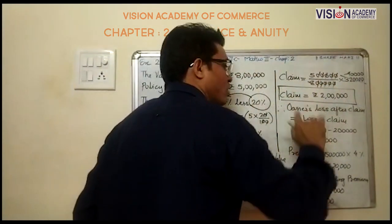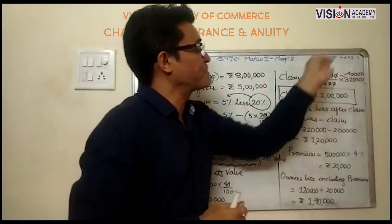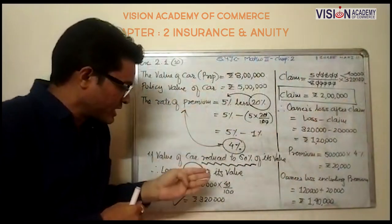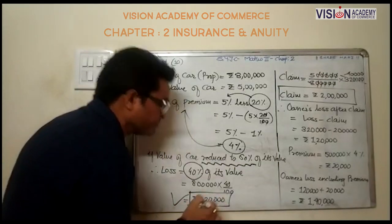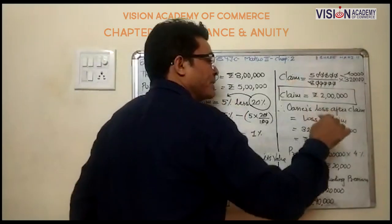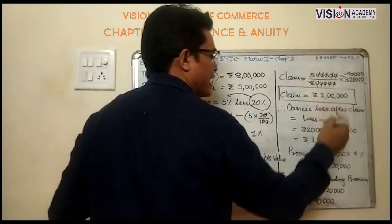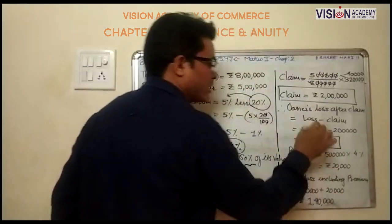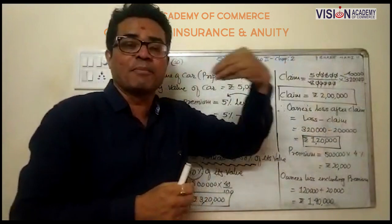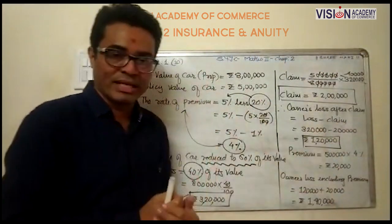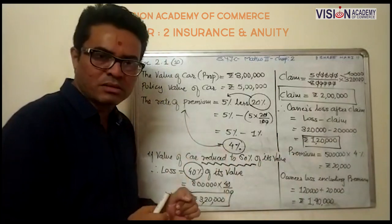Owner's loss after claim: total loss was 3 lakhs 20 thousand minus claim of 2 lakhs comes to rupees 1 lakh 20 thousand. So owner's loss after claim is 1 lakh 20 thousand.